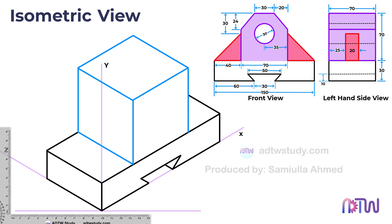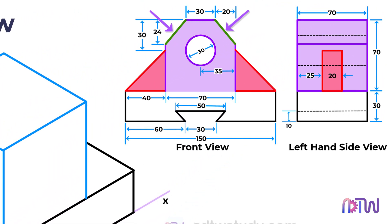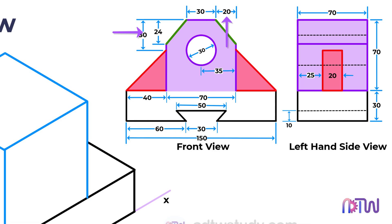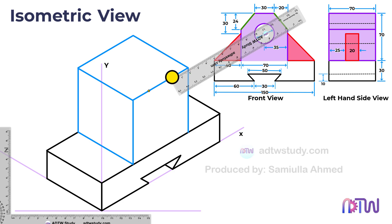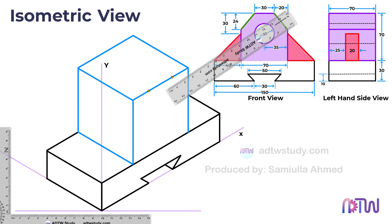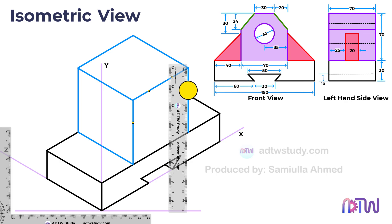We notice that the two edges of this feature are chamfered. The dimensions of the chamfer are 24 millimeters and 20 millimeters. To achieve this, mark 20 millimeters on top from both edges and then measure vertically by 24 millimeters on these edges. Afterwards, draw parallel lines to the z-axis from these points to complete the chamfers.